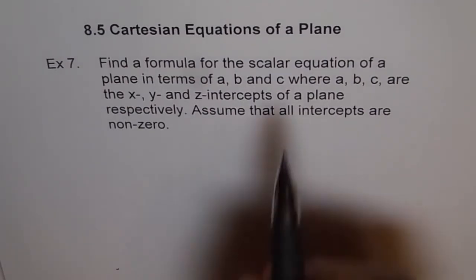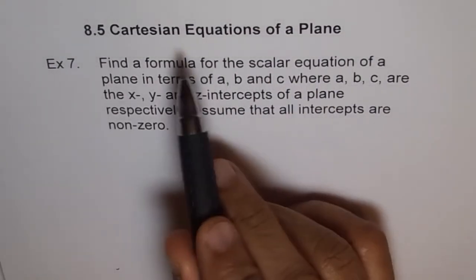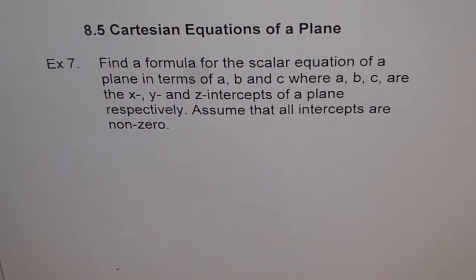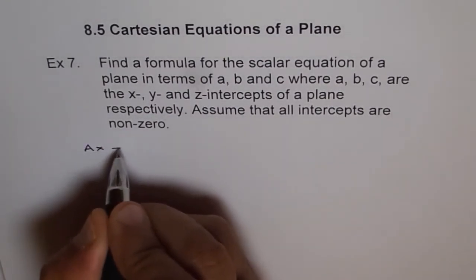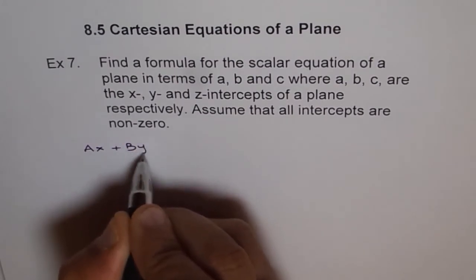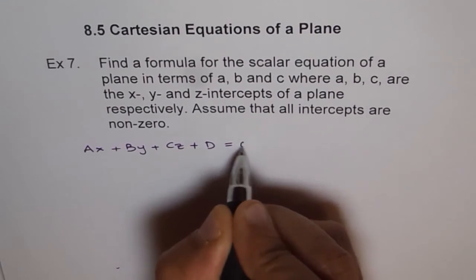Now, that's interesting. First part is scalar equation. What is it? Scalar equation is the same as Cartesian equation of a plane, right? So which is written as AX plus BY plus CZ plus D equals to 0.